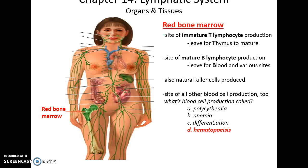Red bone marrow is considered part of the lymphatic system because it is where lymphocytes are produced. Immature T lymphocytes are produced in the red bone marrow and then leave for the thymus to mature. The mature B lymphocytes are also produced in the red bone marrow, as are natural killer cells.